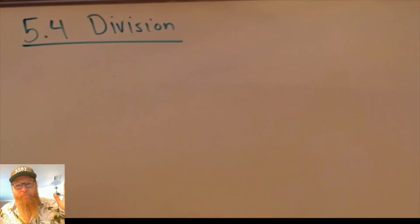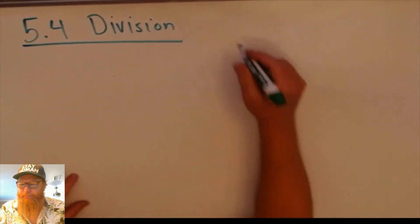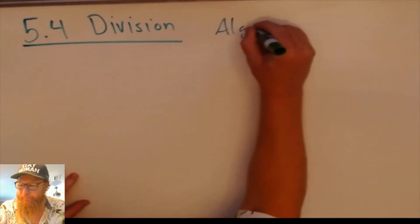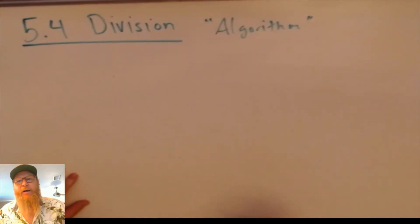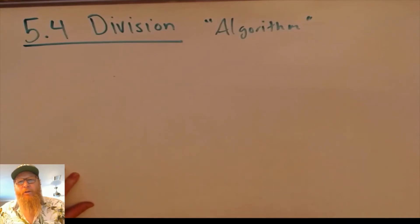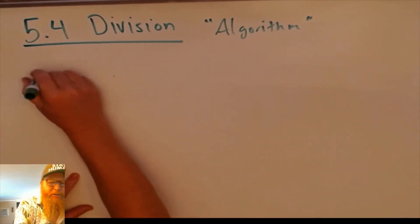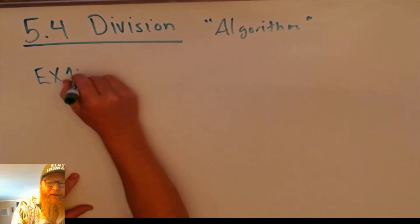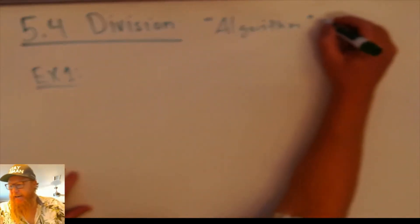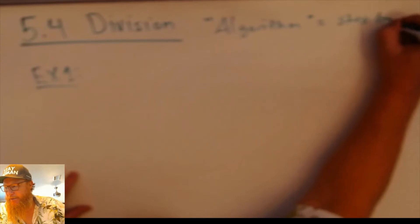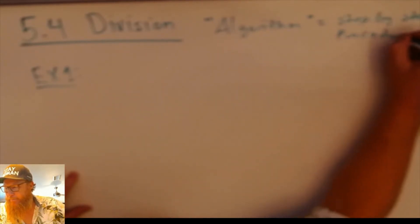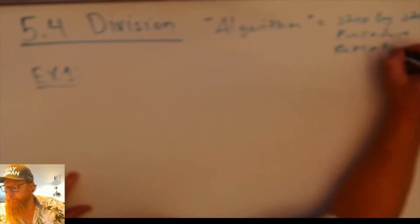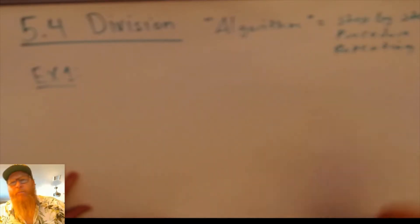The first thing I want to mention is that division is an algorithm. I'm going to show you two different algorithms. We have what's called the long division algorithm. An algorithm is a fancy way of saying a step-by-step procedure that is repeatable — a repeating procedure.